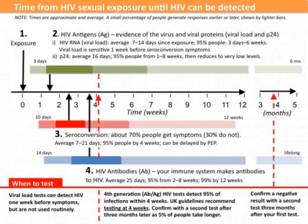HIV tests known as rapid tests, which can now give a result in as little as 60 seconds, are based on ELISA technology. As such, any result from one of these tests must also be verified in a laboratory, typically with a second ELISA and a Western Blot.